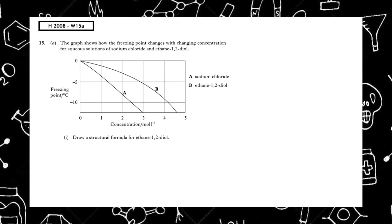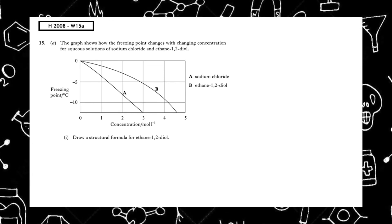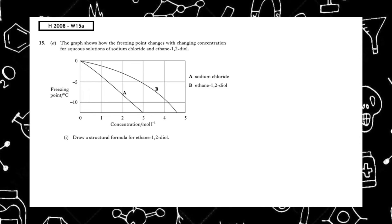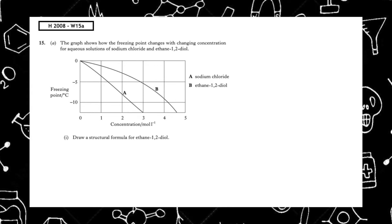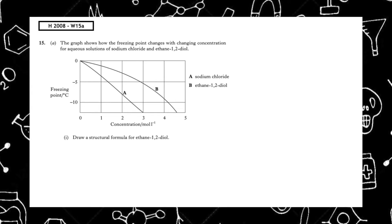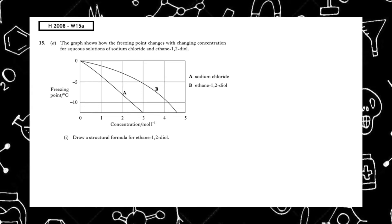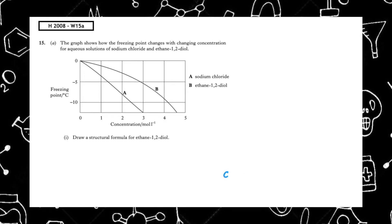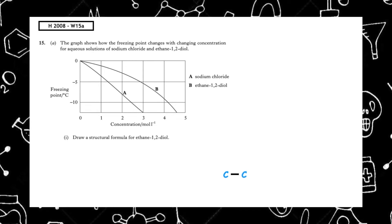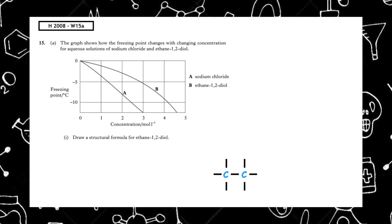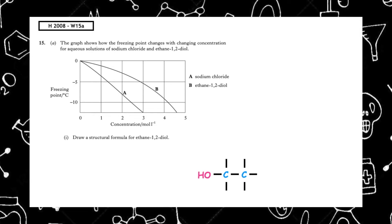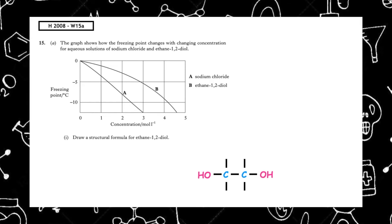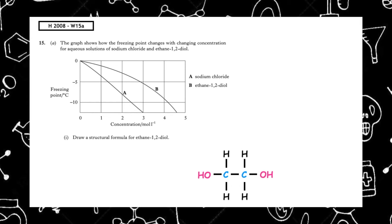This past paper question is from The Higher, 2008, written 15A. The graph shows how the freezing point changes with changing concentration for aqueous solutions of sodium chloride and ethan-1,2-diol. Draw the structural formula for ethan-1,2-diol. The prefix 'eth' tells us how many carbons to draw. It is a diol, meaning two hydroxyl groups, with one on position one and one on position two. We fill the rest with hydrogens — this is how we draw ethan-1,2-diol.